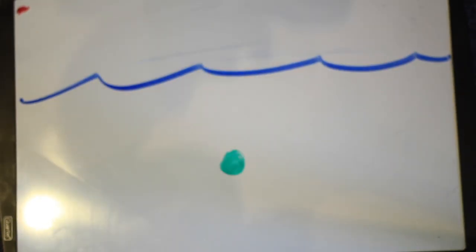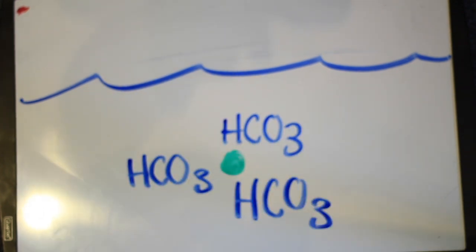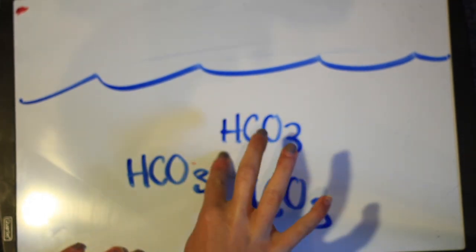Hydrogen ions are released by carbonic acid that bind to carbonate to form bicarbonate, decreasing the amount of carbonate in the water.